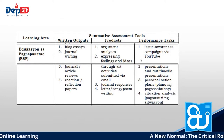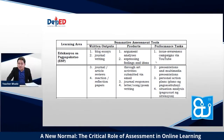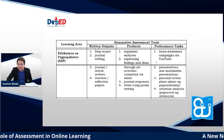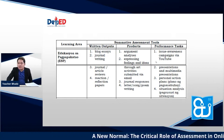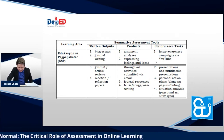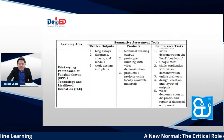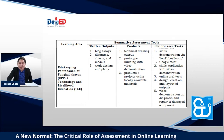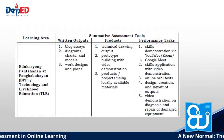For edukasyon sa pagpapakatao (EsP), suggested tools include vlogs, essays, journal writing, reaction and reflection papers; products include argument analysis and expressing feelings and ideas through art activities; performance tasks include issue awareness campaigns via YouTube, multimedia presentations, personal action plans, and situation analysis. For edukasyon sa pantahanan at pangkabuhayan (EPP) or TLE, suggested tools include blog essays, diagrams, charts and models, and work designs and plans.